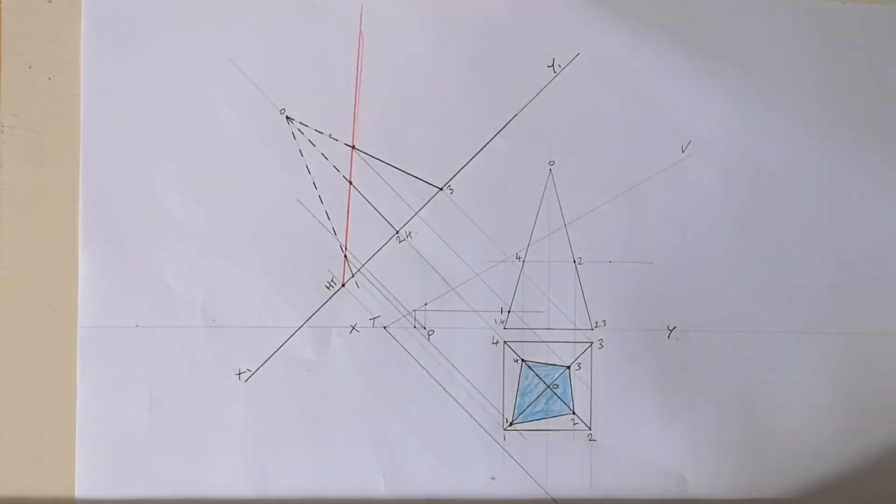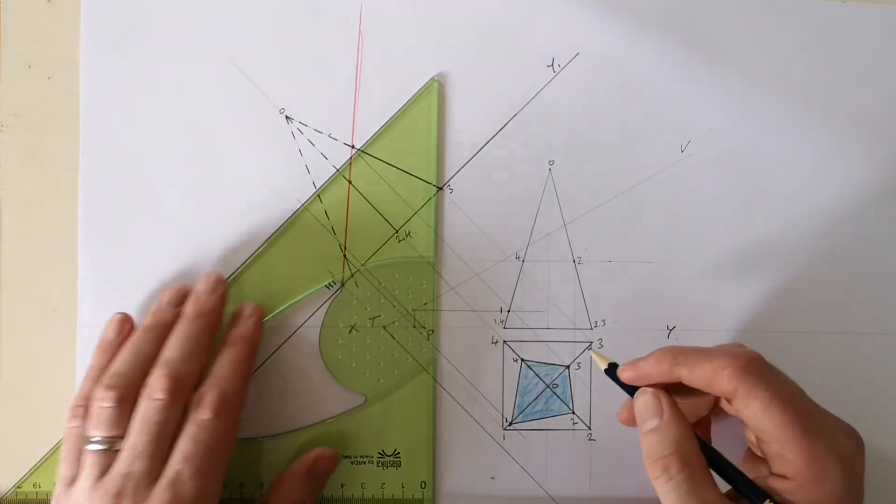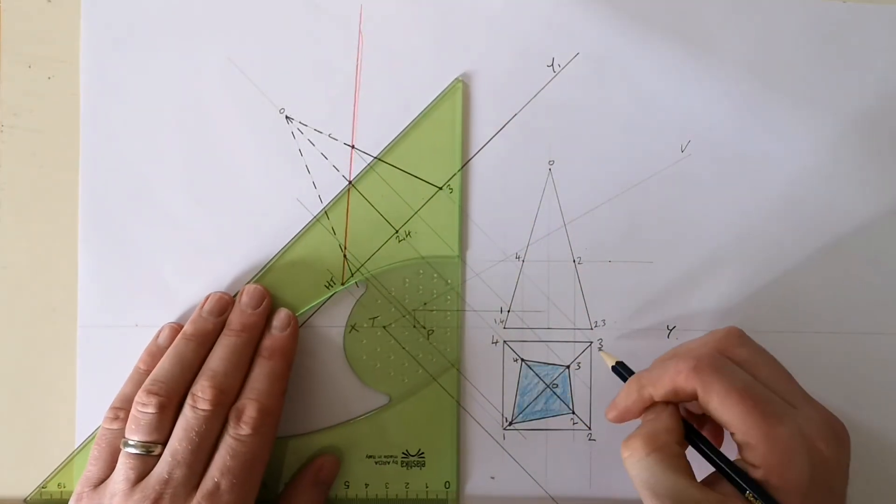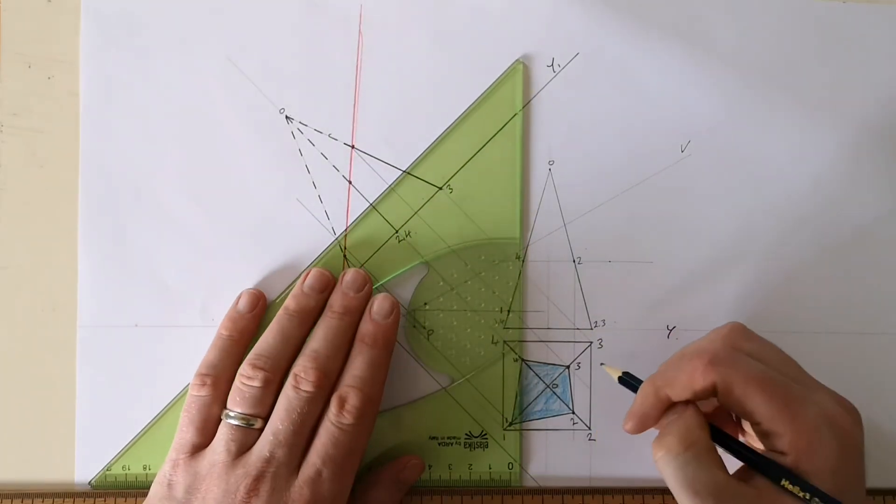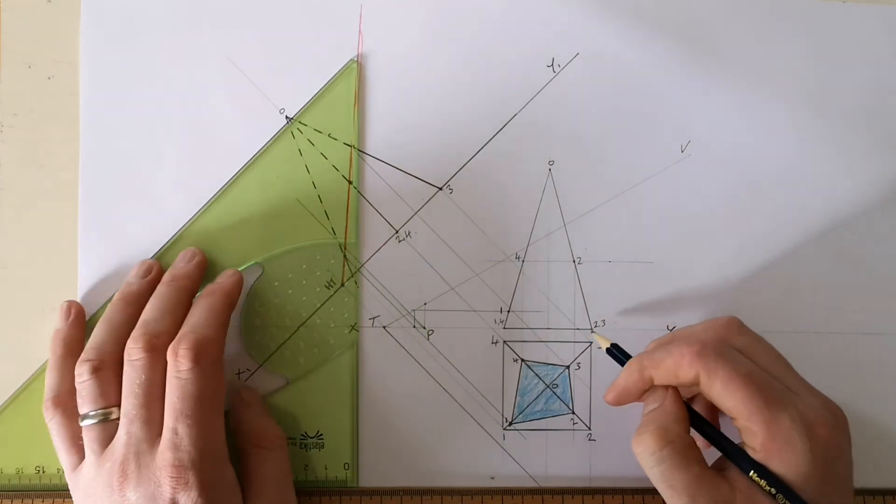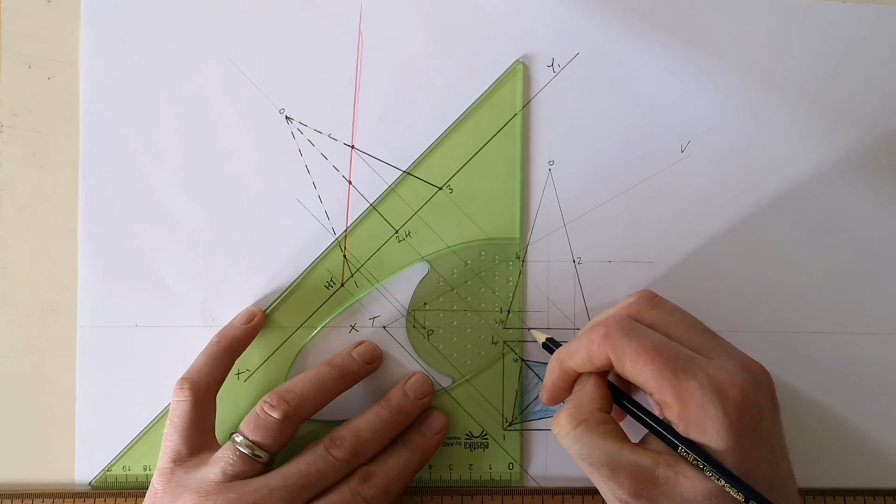And we'll do the same now for number three. So three comes up, here, crosses here.